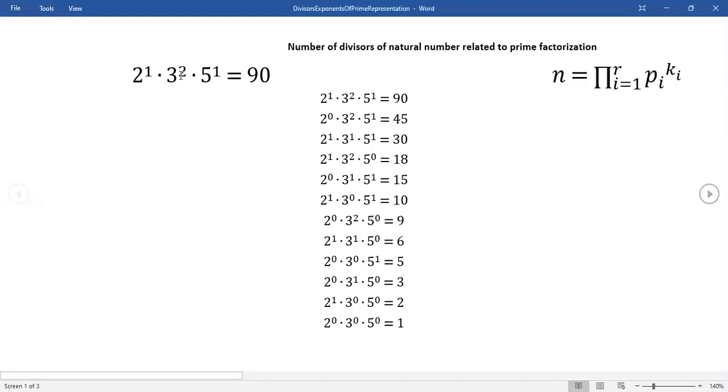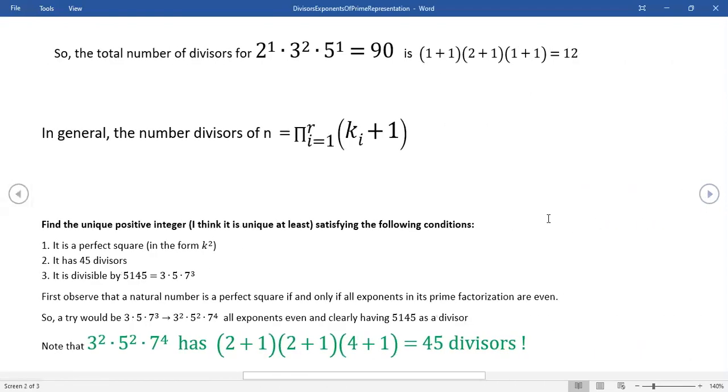Now, keep in mind, you have one, two, one right here. So notice that the number of divisors, the one, the two and the one, you just add one and you're adding one each time to account for the fact that zero is a possibility. And so just by adding one to each of these exponents and then taking the product of that result, you get the 12 that you saw.